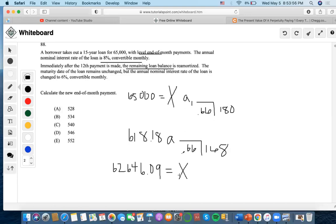A to the 168, but change to 6% monthly. So 6 divided by 12 it's going to be 0.5. Right now let's find X. Okay, so it'll be 62,646.09, and then we'll end up getting that the payment is 552.